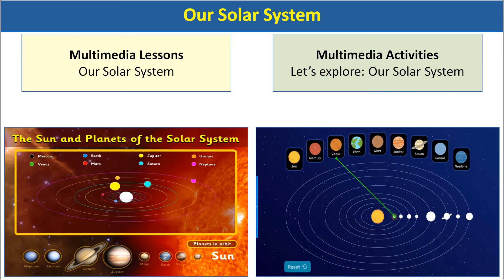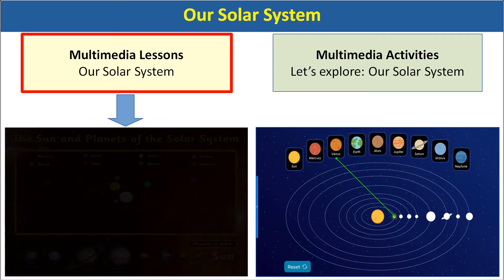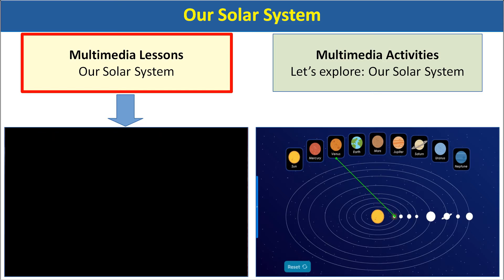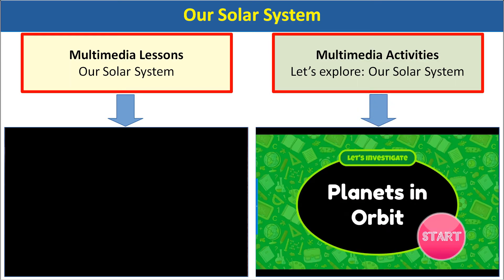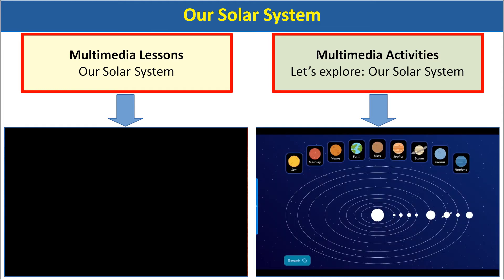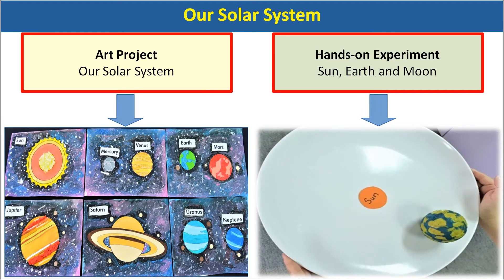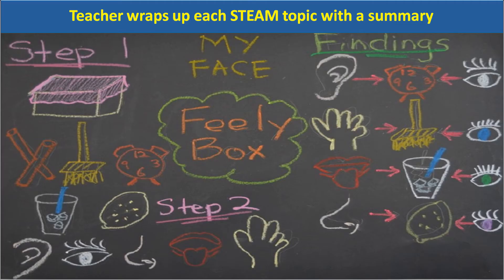In Art: Solar System, children discover the solar system through the multimedia lesson — learning, for example, that the core of Earth is mostly iron — and through interactive activities such as placing the sun and planets in the correct positions in the solar system. Through the art project and hands-on experiment, children develop a deeper understanding of the sun and planets, and the conditions needed for life to exist on a planet. After each experiment or experiential activity, the teacher reviews it with children by guiding them to record and share their findings, reflecting their understanding of the topic.